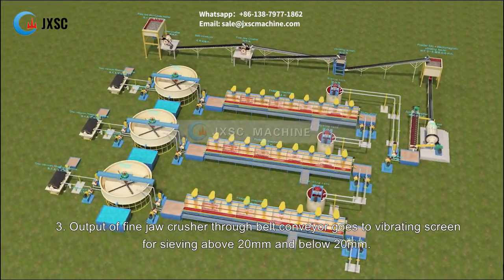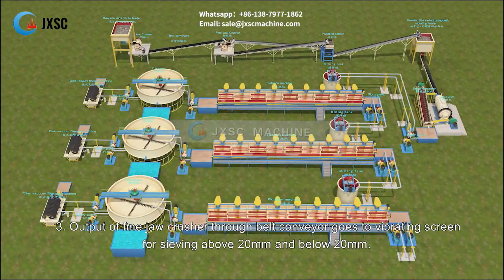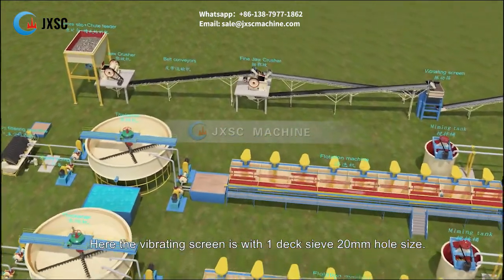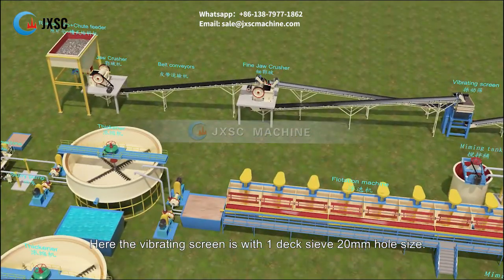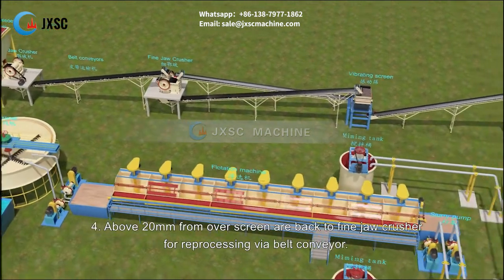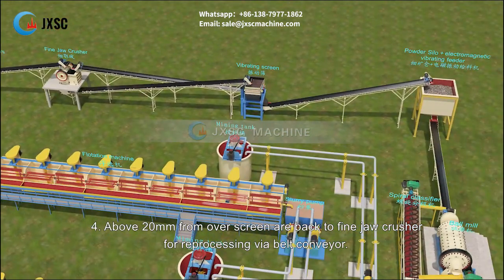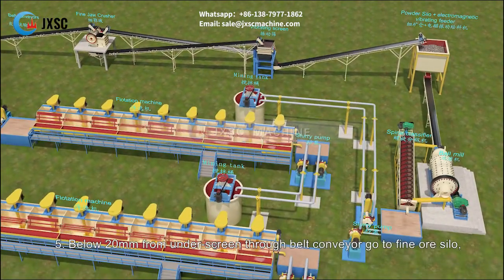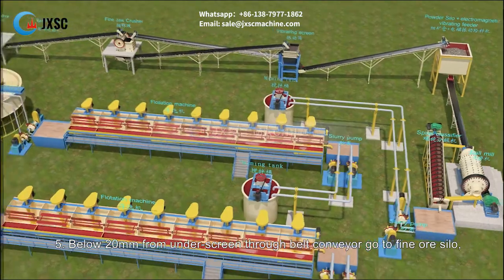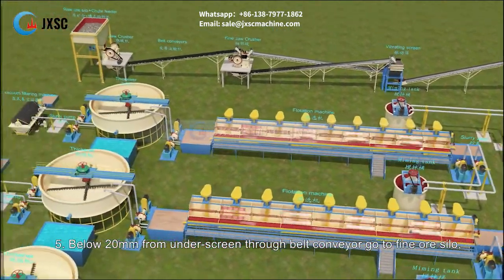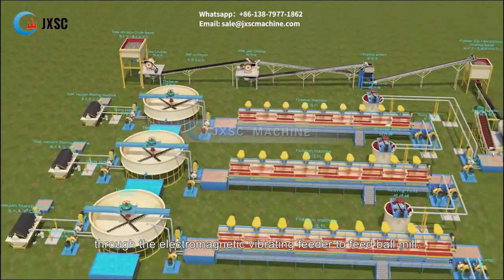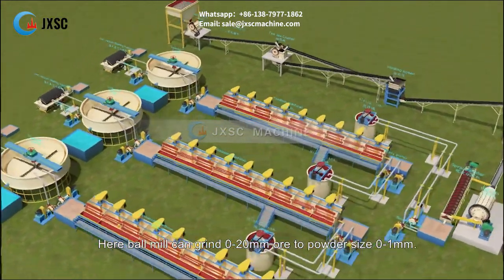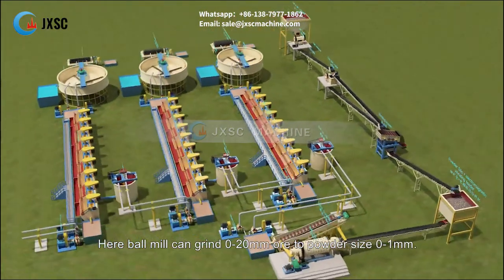Output of the fine jaw crusher goes via belt conveyor to a vibrating screen for sieving above 20 mm and below 20 mm. The vibrating screen has one deck with a 20 mm hole size. Material above 20 mm returns to the fine jaw crusher for reprocessing. Below 20 mm material goes through belt conveyor to the fine ore silo, then through an electromagnetic vibrating feeder to feed the ball mill, which grinds 0 to 20 mm ore to powder size 0 to 1 mm.